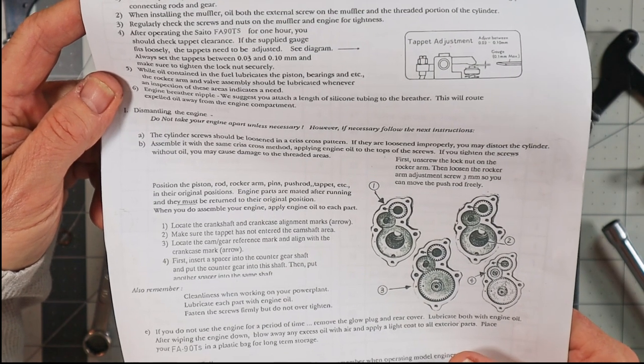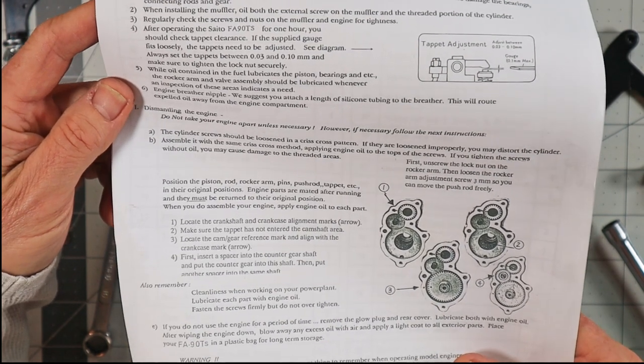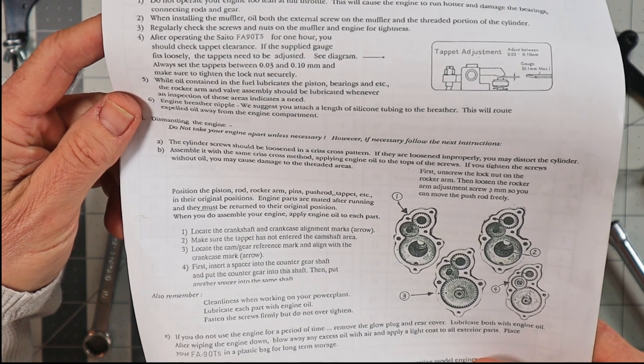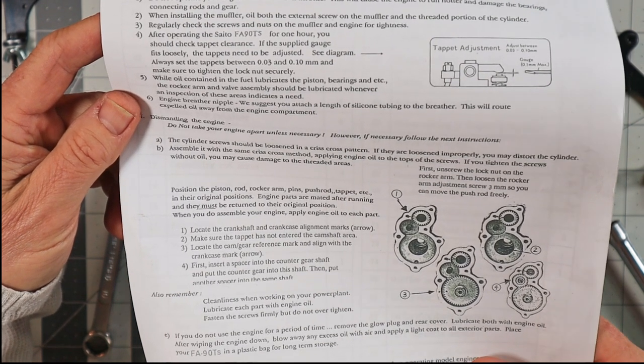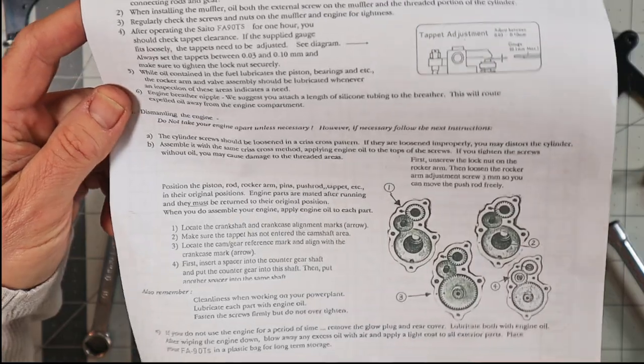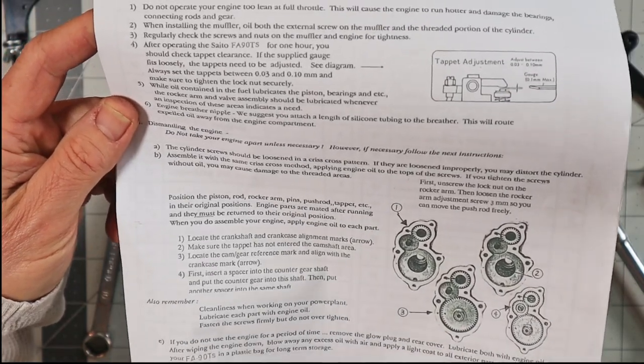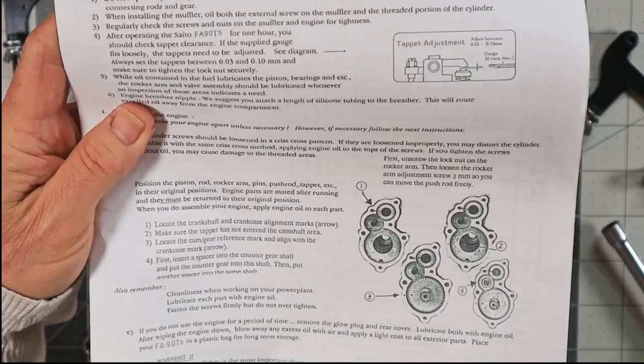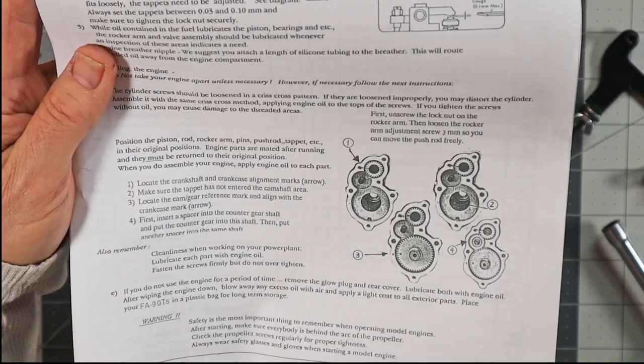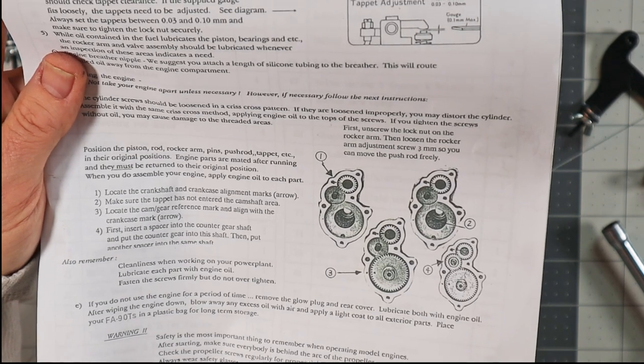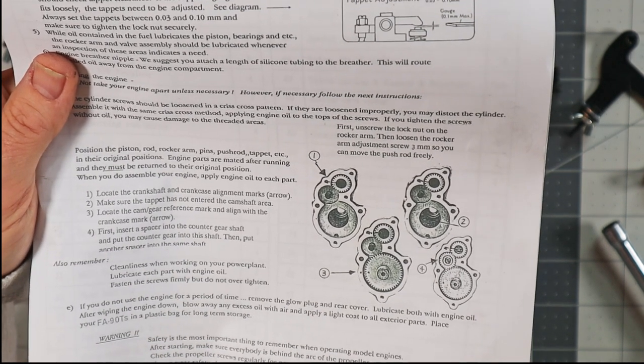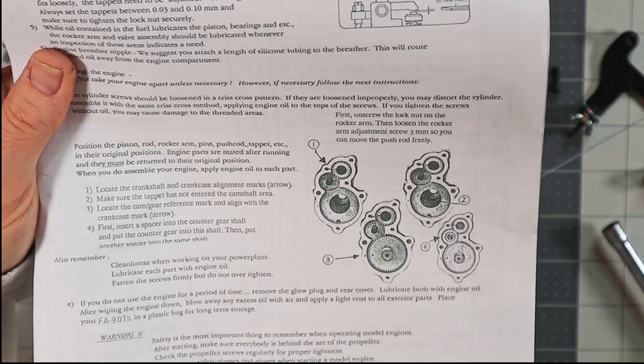Let me read exactly what this says here. Assemble, okay, fit, first unscrew the lock, okay. Position a piston rod, rocker arm pins, push rod taps, etc. in their original position. Engine parts must be made, when you do assemble your engine, apply engine oil to each part. So it doesn't say anything about timing this engine where on a normal single cylinder four-stroke you have to have the piston top dead center and then your alignment mark. This is not that way at all.